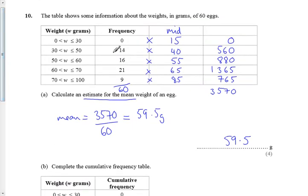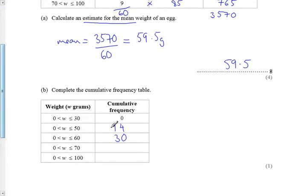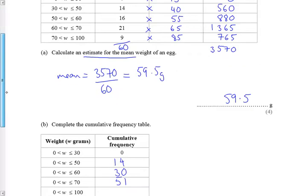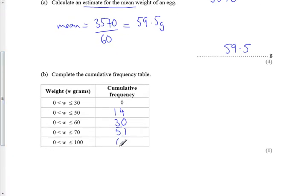We want the weights up to 70, so we want the 14, 16, and the 21, and 0. So that gives us a total of, I think 21 gives us 51. And then all of the weights all together means that we want the 0, the 14, the 16, the 21, and the 9 adding up all the way up. So we need to add the 9 onto our total, gives us that. So 0, 14, 30, 51, 60.